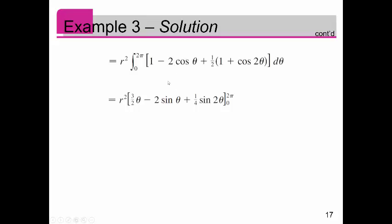When you integrate this, you end up getting three halves theta. That's because the one half and one in this one combine to three halves. Cosine of theta integrates as two sine of theta, and this one half cosine two theta integrates as one fourth sine two theta.